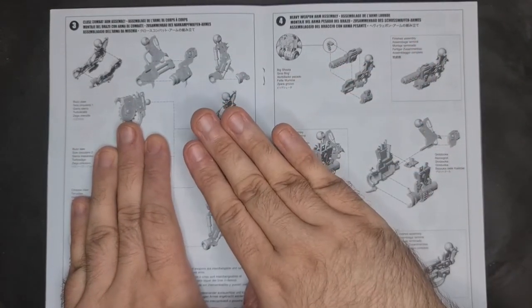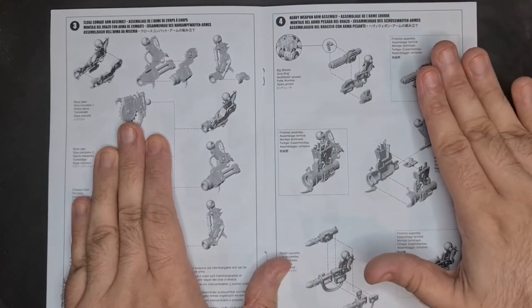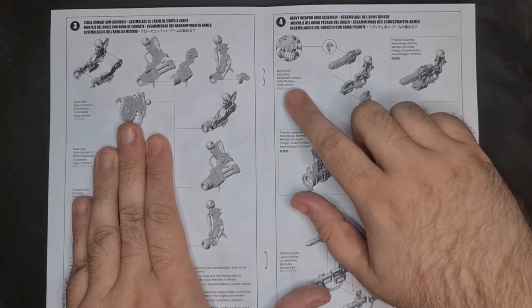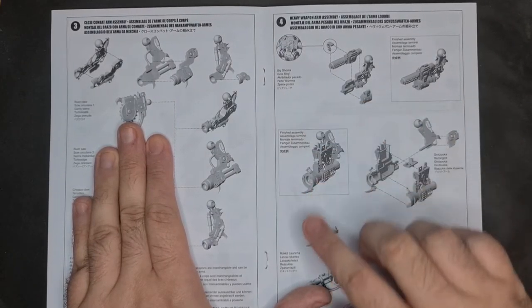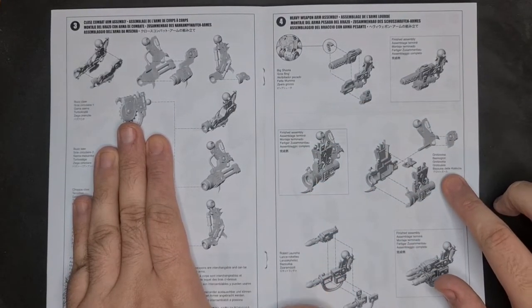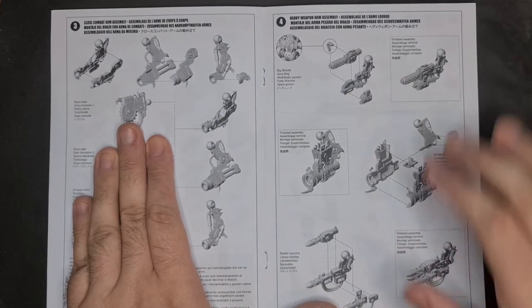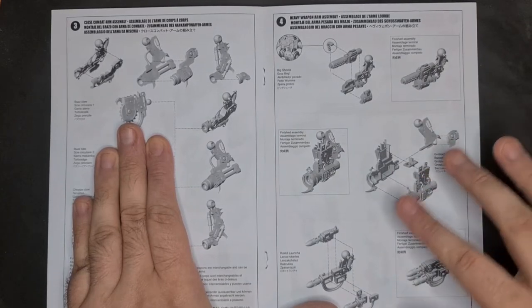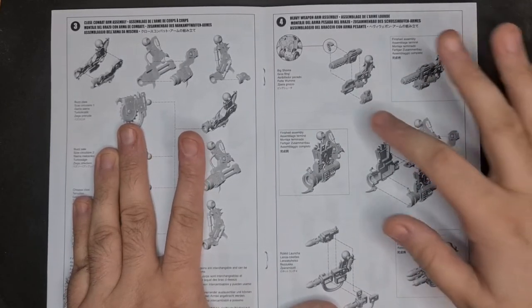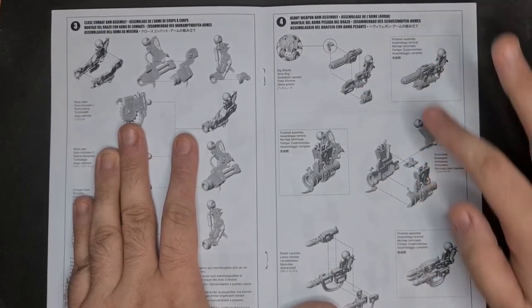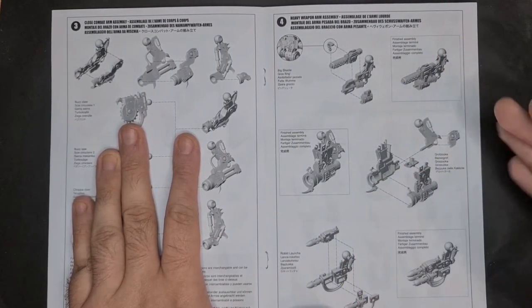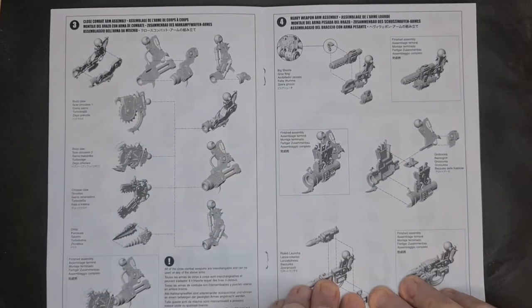So that's your close combat arm assembly. Now we've got heavy weapon arm assembly. So you've got big shoota, grotzuka, and rokkit launcha. And then you've got your finished assemblies of these. These are quite simple. Obviously you get two sides you put together, and then you get little pieces part here, and then, so on, like the rocket for the rokkit launcha, and then little bits for the grotzuka.